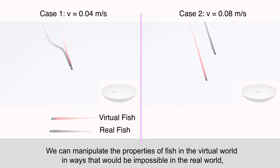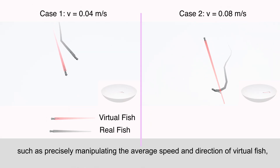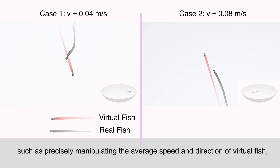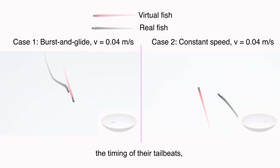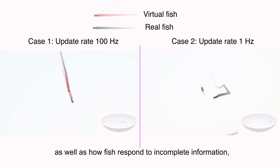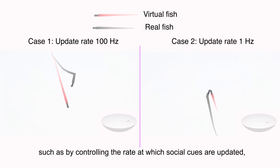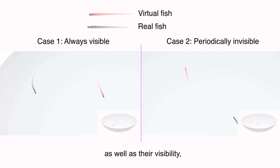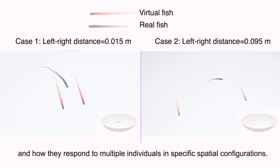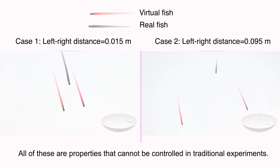We can manipulate the properties of fish in the virtual world in ways that would be impossible in the real world, such as precisely manipulating the average speed and direction of virtual fish, the timing of their tailbeats, as well as how fish respond to incomplete information, such as by controlling the rate at which social cues are updated, as well as their visibility, and how they respond to multiple individuals in specific spatial configurations — all properties that cannot be controlled in traditional experiments.